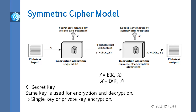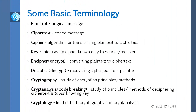The second problem is: how do you get the secret key to the other side? Some of the key terms are: plaintext — basically the one that you understand; ciphertext — the one that is encrypted; cipher — the algorithm; key — what we talked about. Cryptography is this whole field. Cryptanalysis is basically analyzing so that you can get the key. Cryptology includes both cryptography and cryptanalysis.